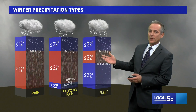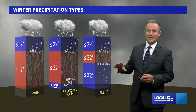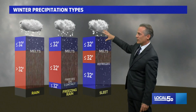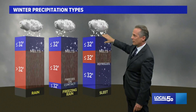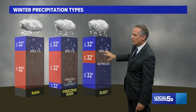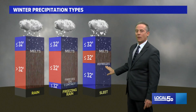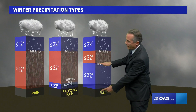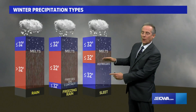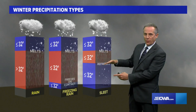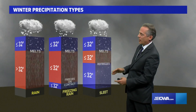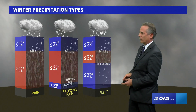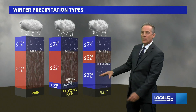The other type of precipitation is sleet, which is interesting too, because it is falling as snow and it melts, but then it refreezes on the way down. The air near the surface is below freezing and it's a thicker column or thicker area of cold air below freezing, so it freezes on the way down.